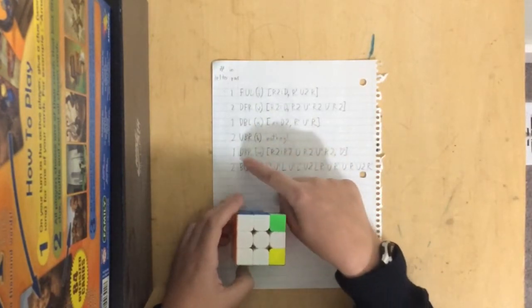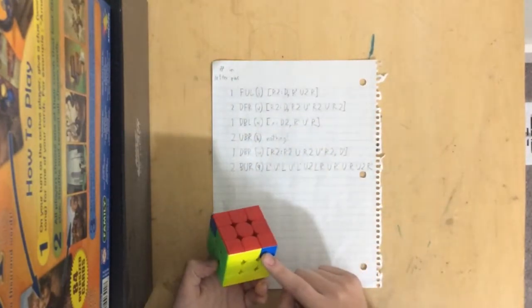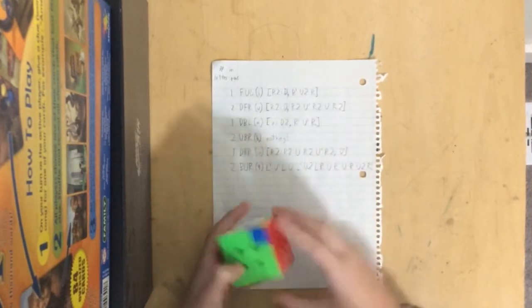Then we go to the next one, which is DBR, W, over here. And this one, we just do normally, because it's first in the letter pair.